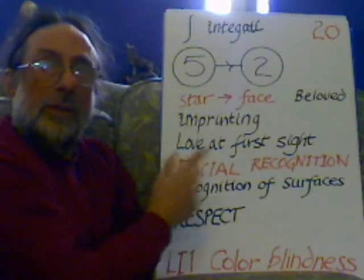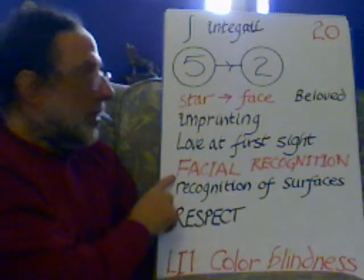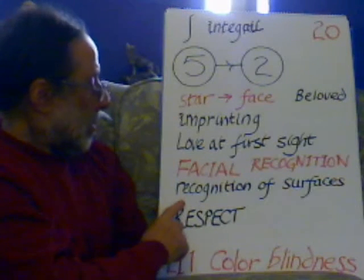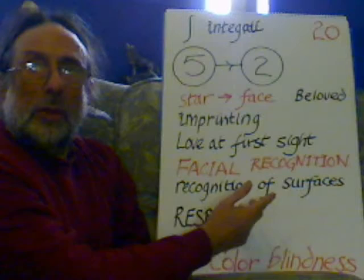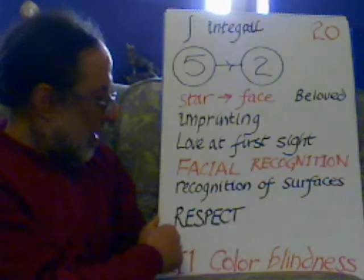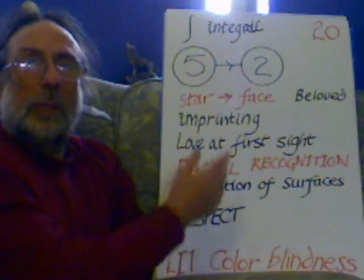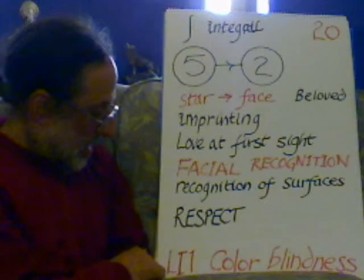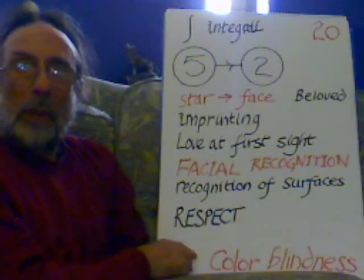Love at first sight — you see the face. This is the function of facial recognition, recognition of surfaces. We recognise an object from its surface, from its colouring. And this is respect. Just as we get inspected, so we respect. This is the large intestine one, colour blindness.